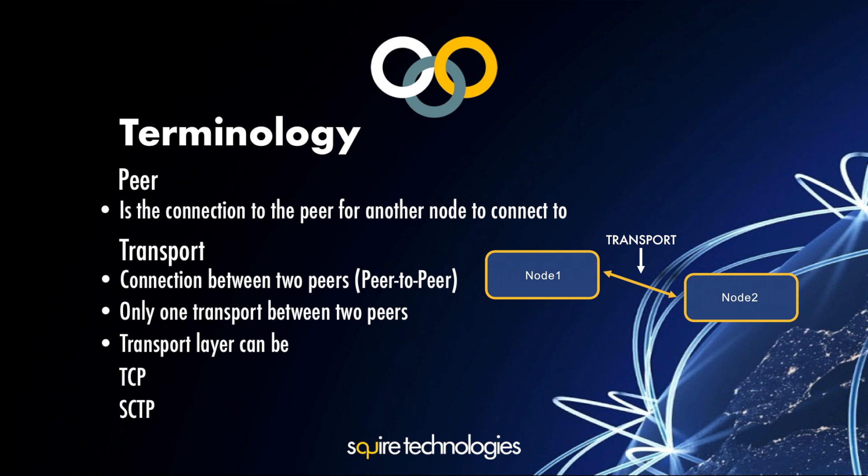The transport layer can be TCP or SCTP. SCTP allows you to set up multi-homing to give you redundancy in the peer-to-peer connection across two different networks. So SCTP does give you underlying redundancy within itself for a peer-to-peer connection, but TCP doesn't — the connection is either there or it isn't.